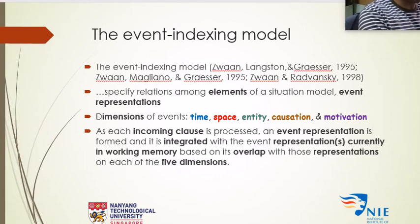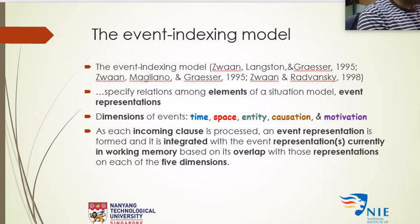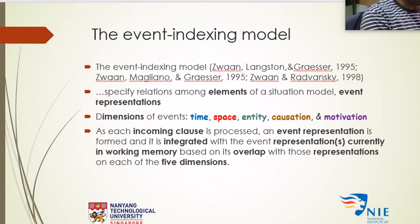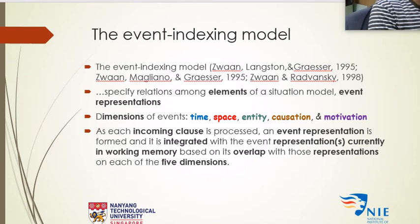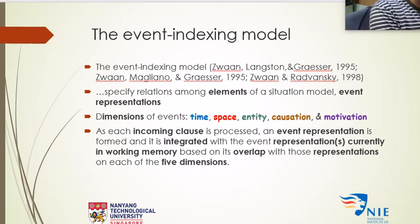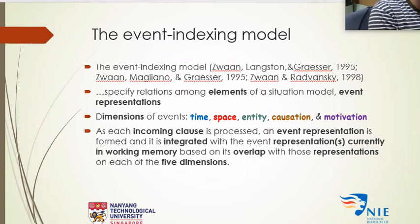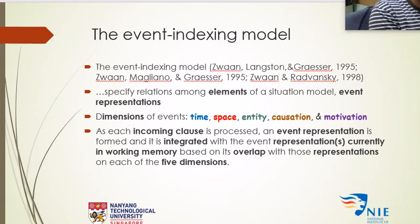As Zwaan puts it, as each incoming clause is processed, an event representation is formed and integrated with event representations currently in working memory based on its overlap with these representations on each of the five dimensions. If the information currently being processed relates to information already processed — sentences already read or heard — the event representation will be much more clear and coherent.